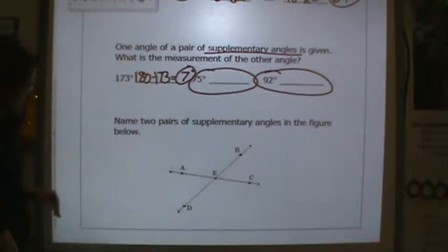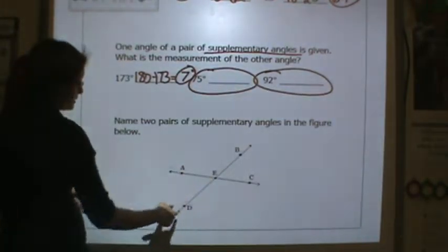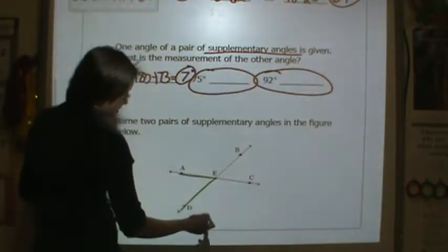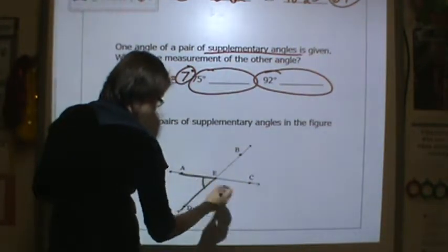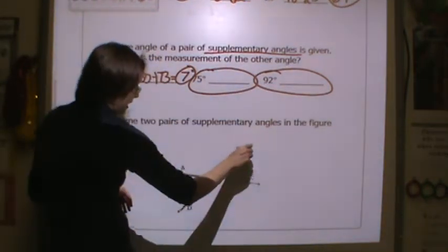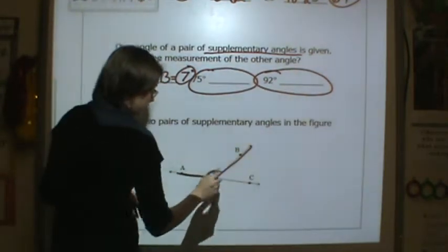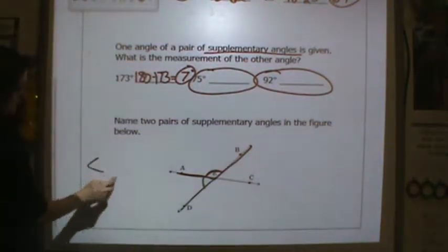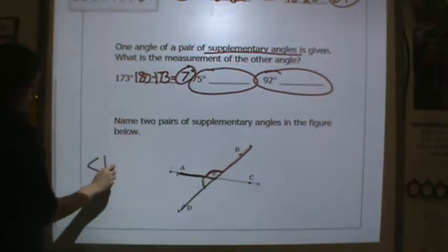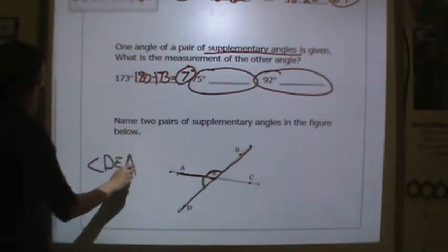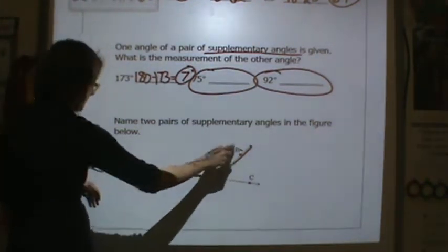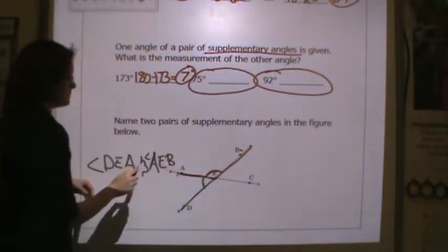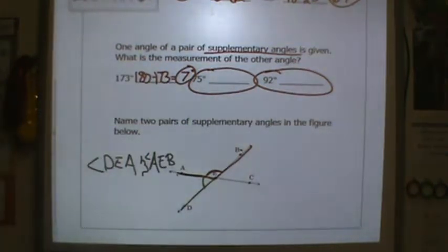Name two pairs of supplementary angles. Well two pairs of supplementary angles are two angles that come together. So I have this angle right here and I have this angle right here that come together to form a straight edge, right? So I have angle DEA and angle AEB come together to make a supplementary angle in that figure.